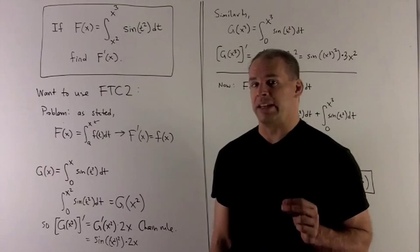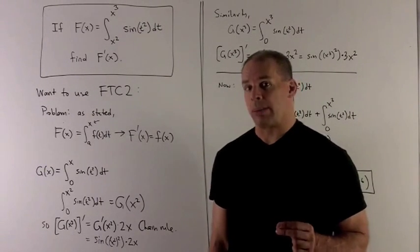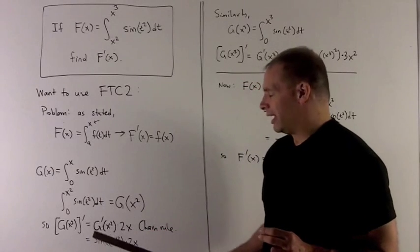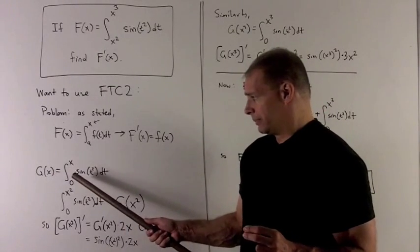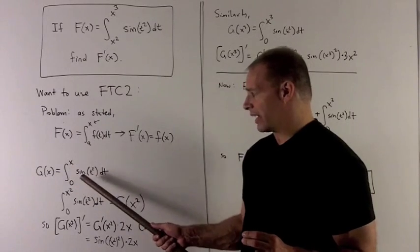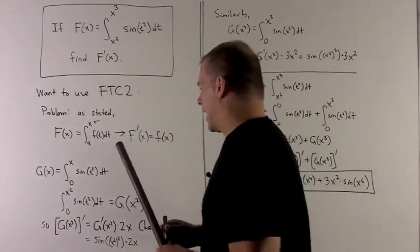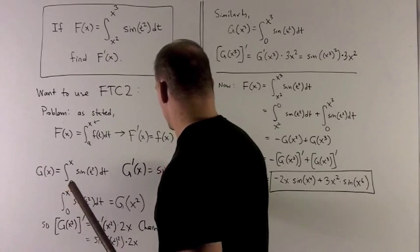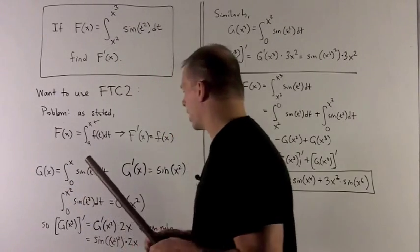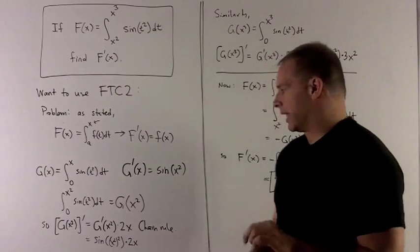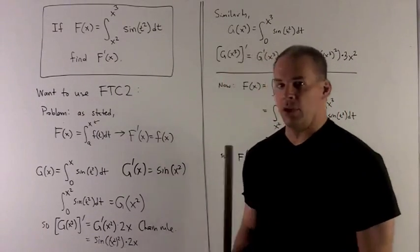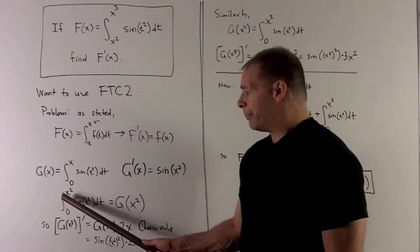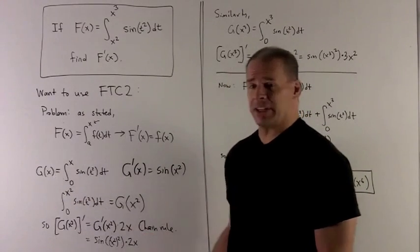So let's take a look at a slightly different function first that'll help us crack this problem open. I'm going to define G of X to be the function that we would like. If I have G of X equal to definite integral from 0 to X of sine of t squared dt, then I have G prime of X equals sine of X squared. That's what we would have liked to have up there, but we don't.